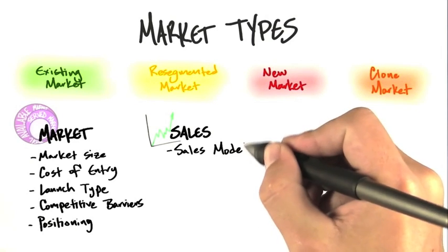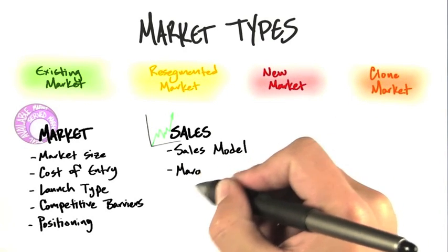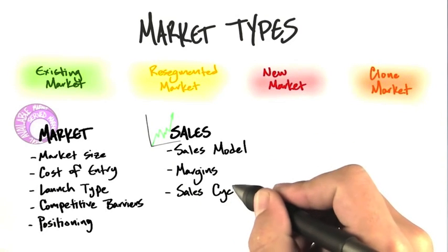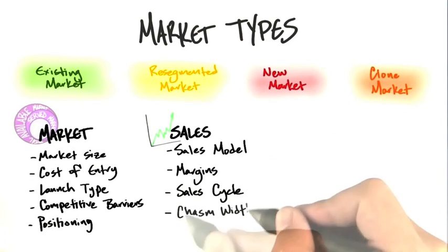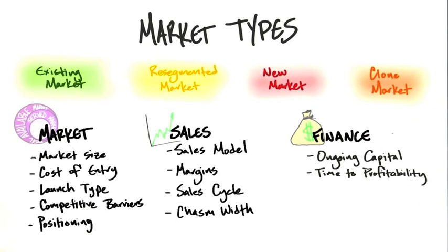It affects your sales model. Are you going to hire direct sales? When do you hire them? What kind of margins you should have, or the profit? How long it takes, that is the sales cycle, and something called the chasm width, which we'll take a look at in a second. It also affects how much money you're going to need to raise, and how long it takes to get to profitability.